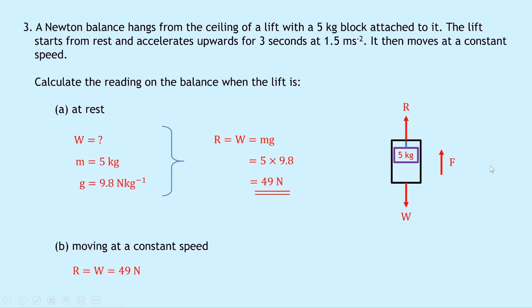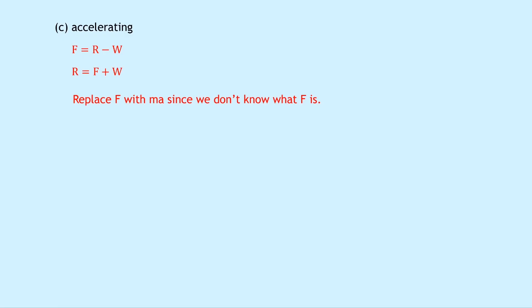Part C asks for the reading when the lift is accelerating upwards. From the free body diagram, the unbalanced force F is upward, meaning R is greater than W. So F equals R minus W, rearranging gives R equals F plus W. Replacing F with ma, we get R equals ma plus W. Substituting: 5 times 1.5 plus 49, which gives 56.5 newtons.